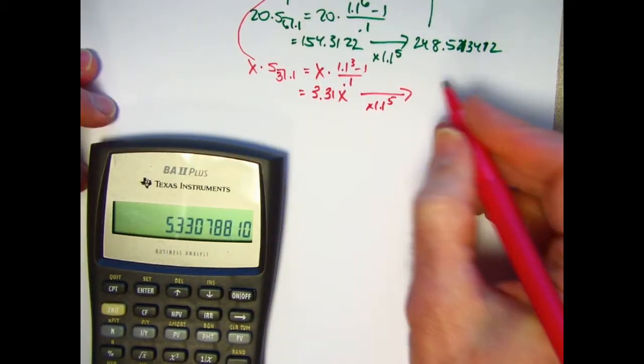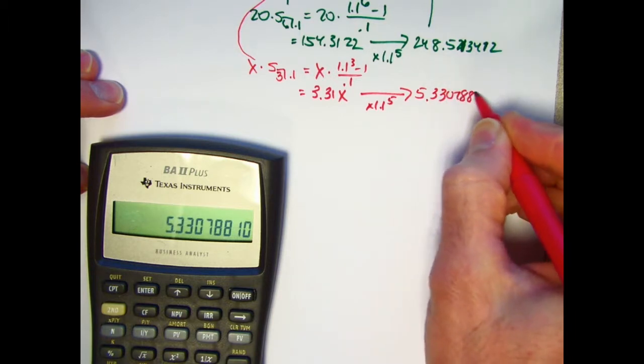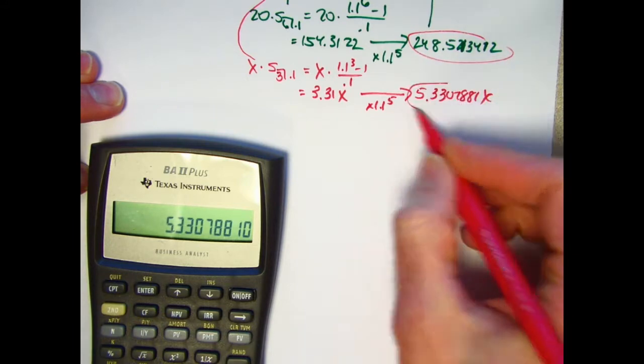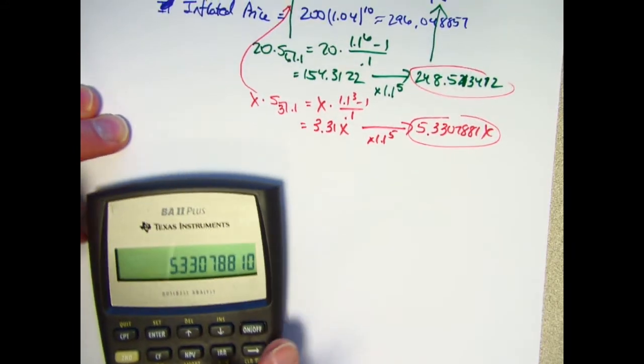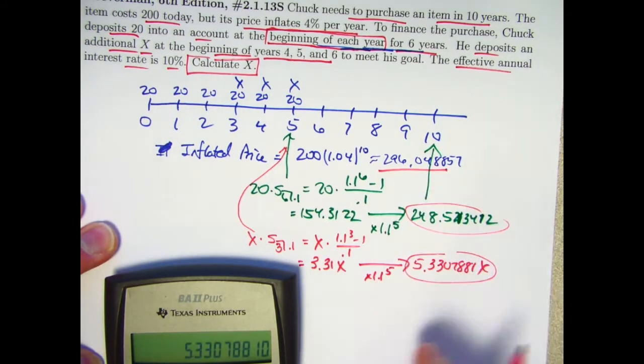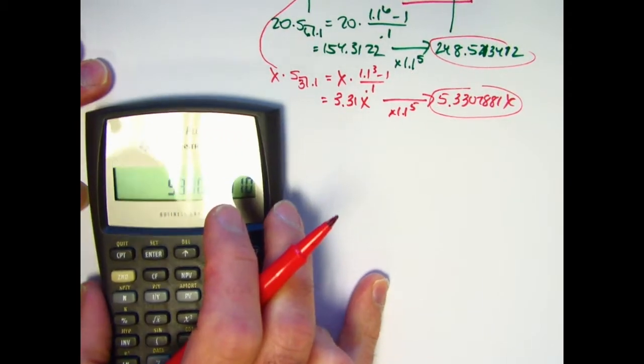1.1 to the 5th power again is this times 3.31. At time 10, we have 5.3307881x. This plus this needs to be the amount that you need to pay for the item, the 296.048857. That's going to allow us to solve for x.